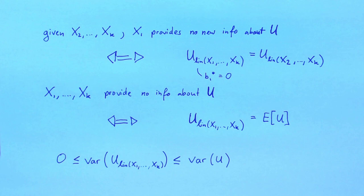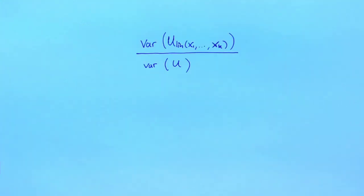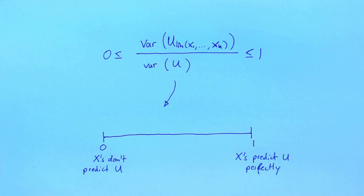We can use the ratio of these two variances to describe how much of the variation of u is predicted by the variation in the axes. This ratio takes values between 0 and 1, with the value 0 indicating that the axes cannot predict u, and the value 1 indicating that the axes can be used to predict u perfectly.